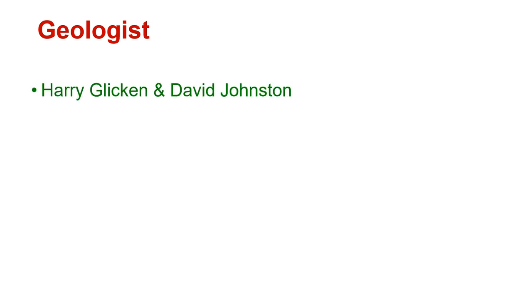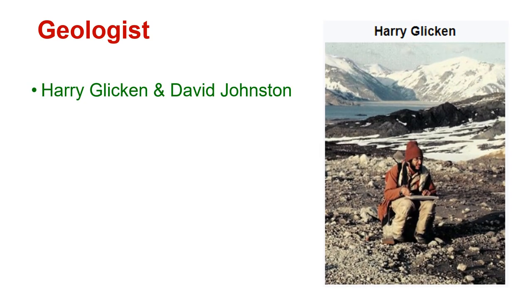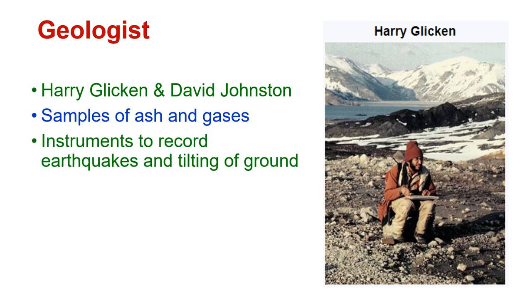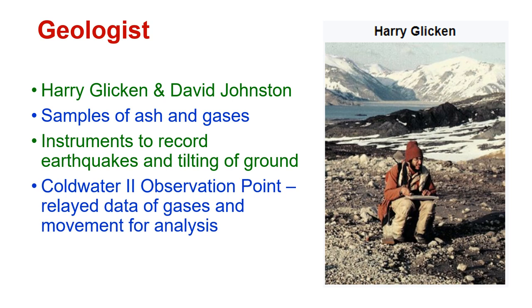There were two geologists that we need to make note of: Harry Glicken and David Johnston. It was their job to take samples of ash and gases from the volcano. They had instruments to record earthquakes and the tilting of the ground. They had permission to be in the Red Zone and were at the Coldwater II observation point, where they relayed data of gases and movement for analysis.